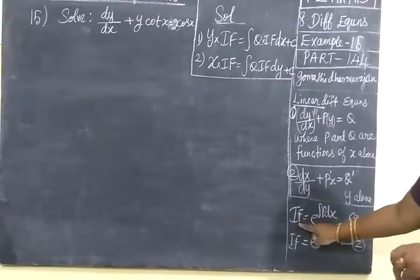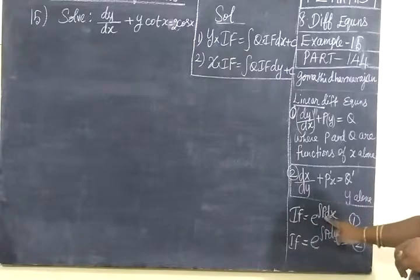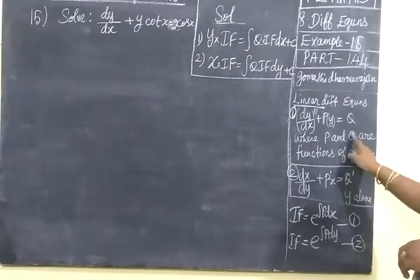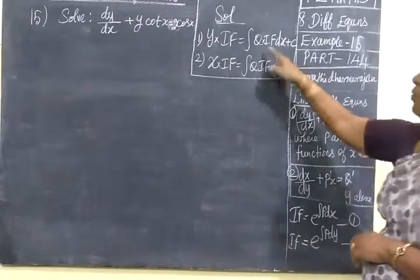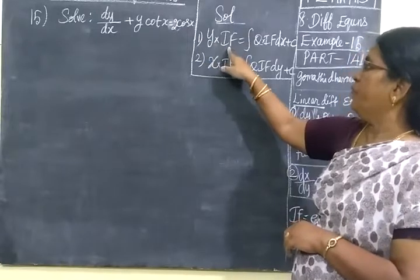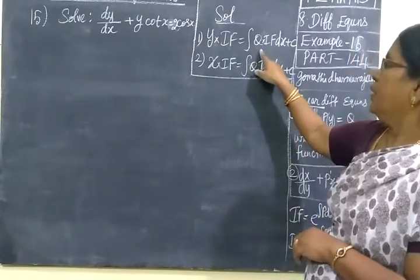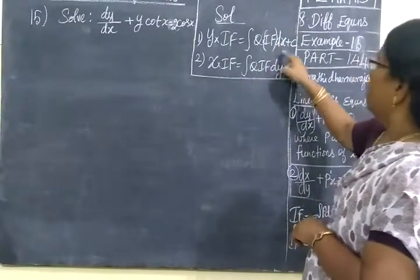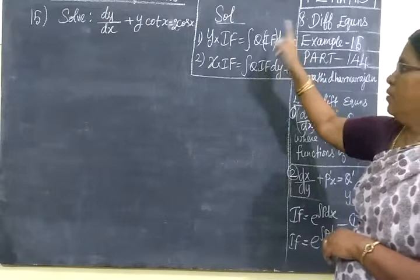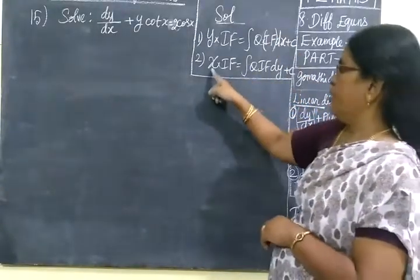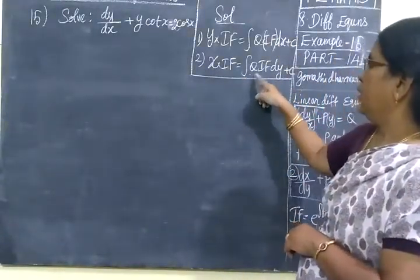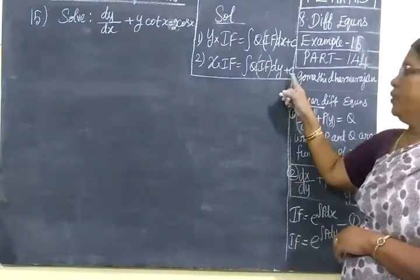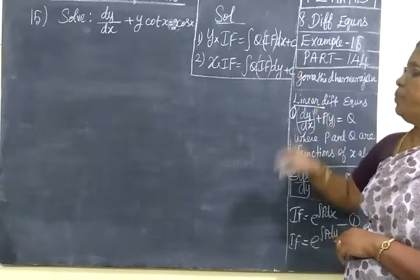Next, you find the integrating factor: e to the power of integral P dx for the first form, and e to the power of integral P dy for the second form. After that, you find the solution: y times integrating factor equals integral of Q times integrating factor dx plus c. With respect to y means x times integrating factor equals integral of Q times integrating factor dy plus c.